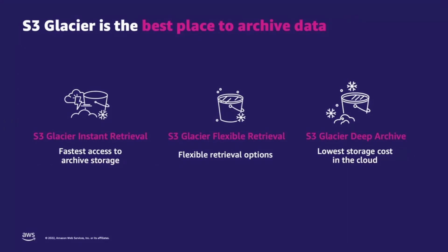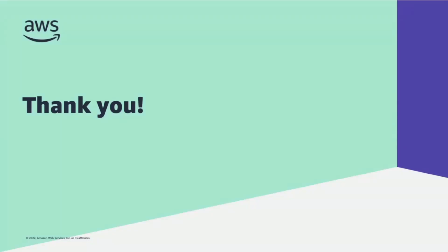In summary, the S3 Glacier storage classes are purpose-built for data archiving, providing you with the highest performing as well as lowest cost archive storage in the cloud. S3 Glacier Instant Retrieval delivers the fastest access to archive storage. You can also use S3 Glacier Flexible Retrieval, which provides the most retrieval flexibility, and S3 Glacier Deep Archive, which delivers the lowest cost storage in the cloud. Thank you for watching — you can get started with S3 Glacier Instant Retrieval today in the S3 console.